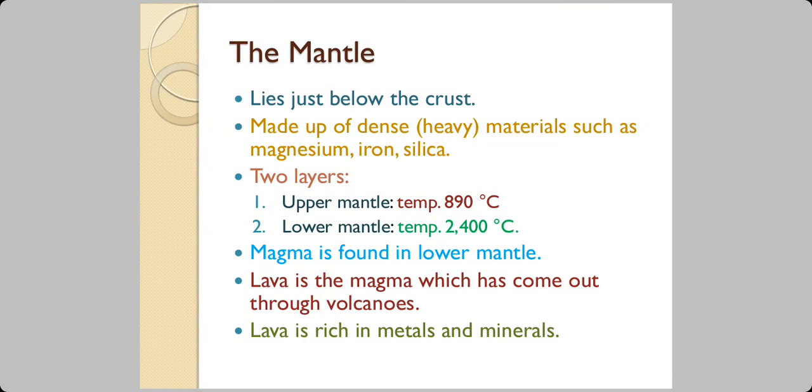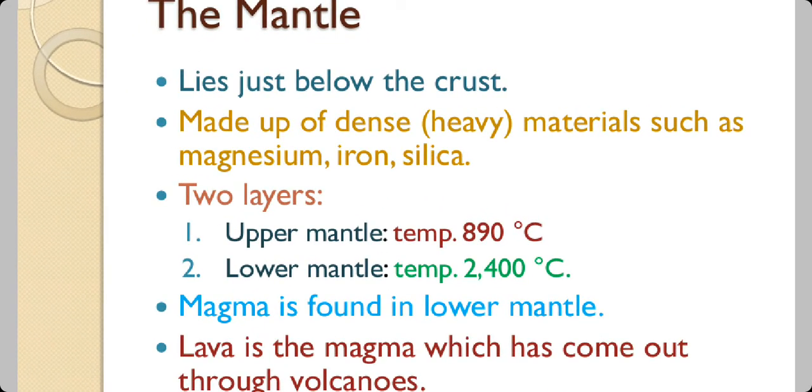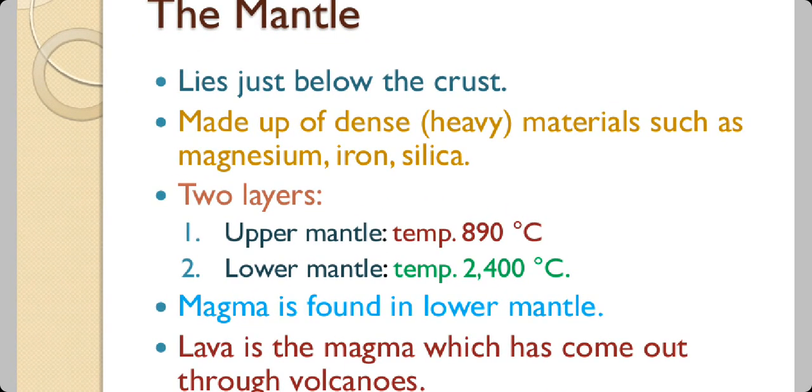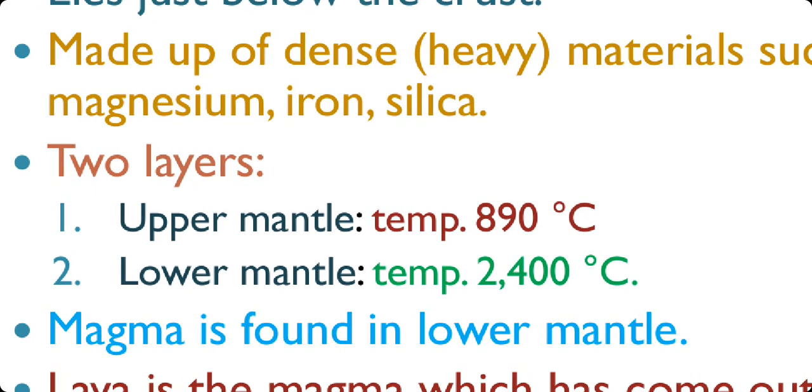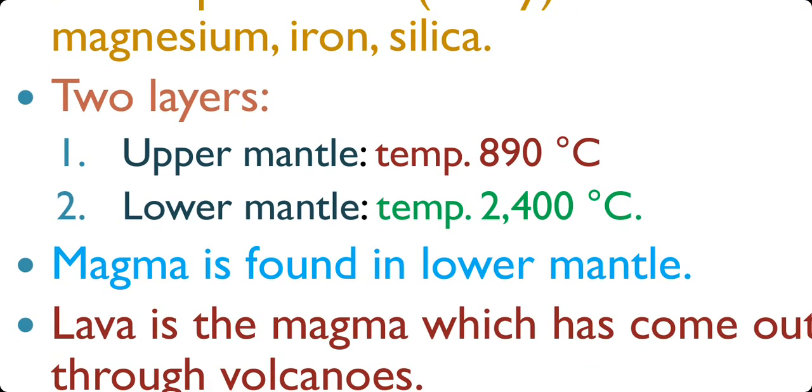Below the crust is the layer known as mantle. This is made up of heavy materials such as magnesium, iron and silica. It has got two distinct layers. The distinction comes from the temperature. The upper layer is much colder at 890 degrees Celsius but it is still very hot. The lower layer is known as lower mantle and it has got a temperature of 2400 degrees Celsius.